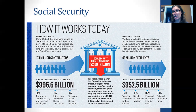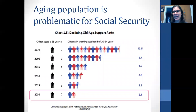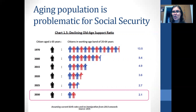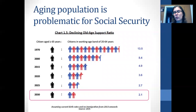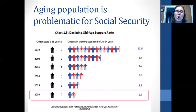However, that's going to start changing. We have an aging population in the United States, which is problematic for social security because the number of people paying into the system is becoming more even with the number of people who are retired, especially with the baby boomers retiring. In 1970, there were 13.5 people paying into social security for every one person receiving it. By 2030, that's projected to be just two people paying in for every one person receiving it — which is problematic because each individual pays in less than the amount one person receives.